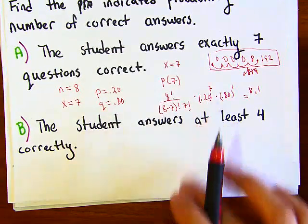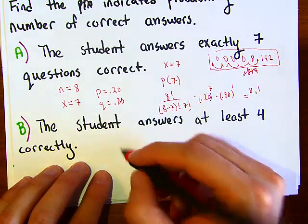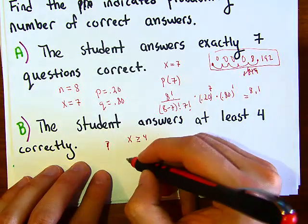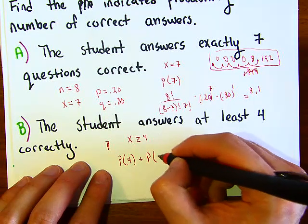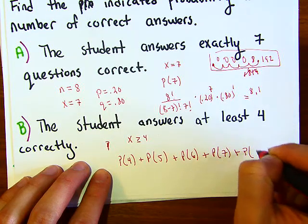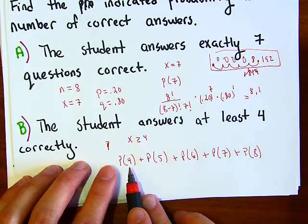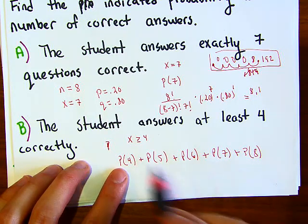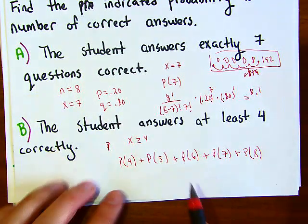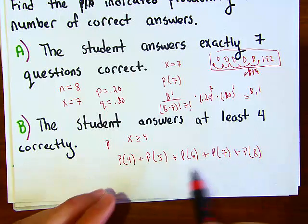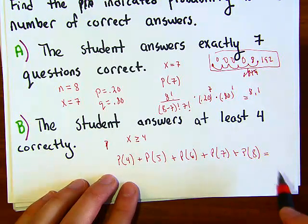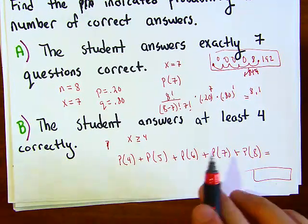Part B: the student answers at least four correctly. This means x is greater than or equal to four, so you need P(4) + P(5) + P(6) + P(7) + P(8). Plug each x value into binomial PDF with n equal to 8 and p equal to 0.20, then add the results together.